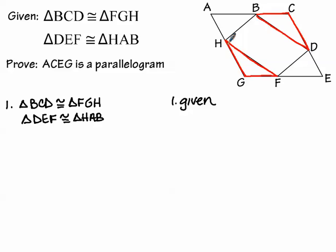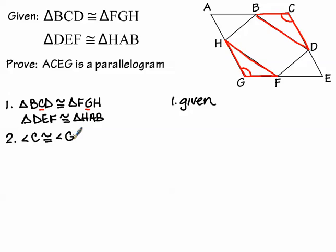The triangles and the large parallelogram don't share an entire side — none of their sides are the same length — so using sides is probably not a good option. We look at angles instead. In triangle BCD, angle BCD at vertex C is also an angle of ACEG. The corresponding angle at G in the other triangle corresponds to angle C. Because they are corresponding parts of congruent triangles, angle C is congruent to angle G — by CPCTC.